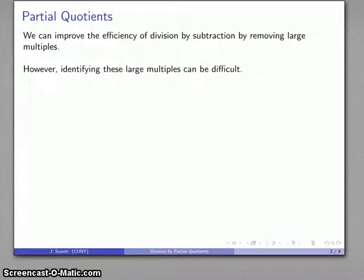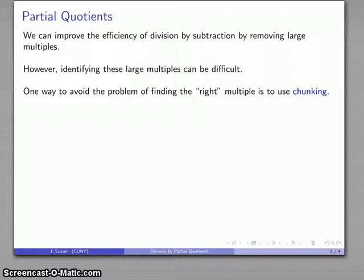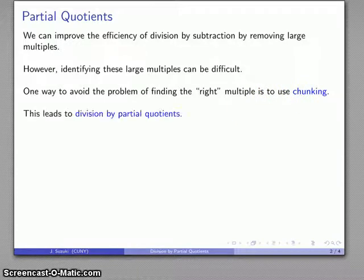The problem is trying to figure out what these large multiples are can be somewhat difficult, but we can take the viewpoint that any multiple we can find is something we can work with. In fact, it's worth pointing out that we don't actually need to find the multiple that we need. We can just find some multiple that works, and a common strategy for doing this is known as chunking. The use of chunking leads to a method known as partial quotients.